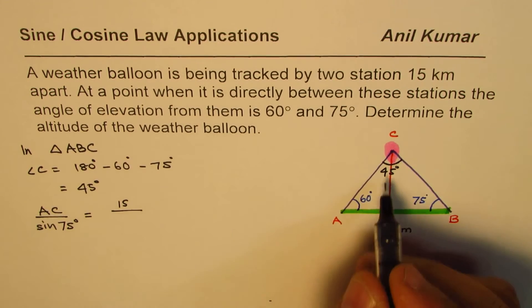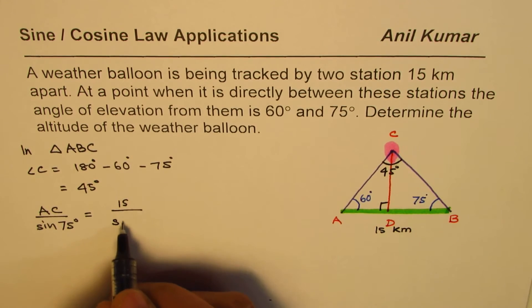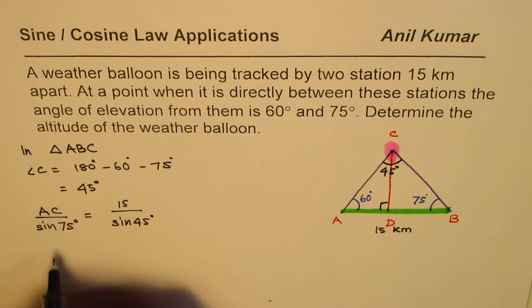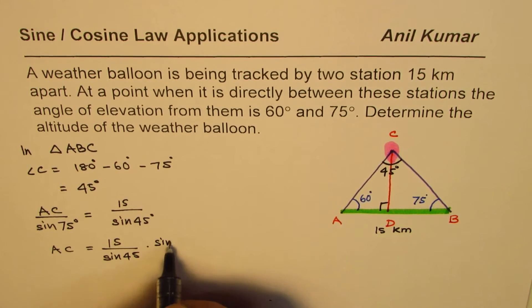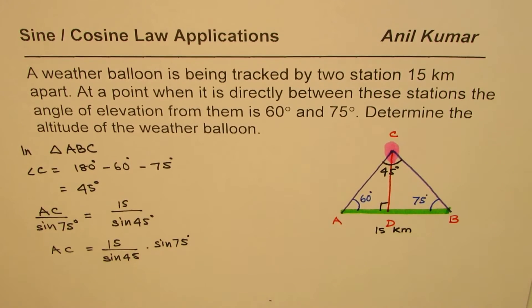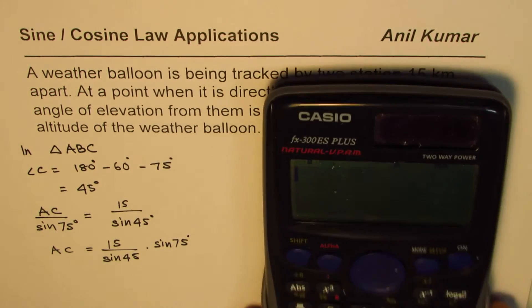Divided by sine of the angle given to us, which is sine of 45 degrees. So AC is equal to 15 over sine of 45 degrees times sine of 75 degrees. Let's calculate this answer.